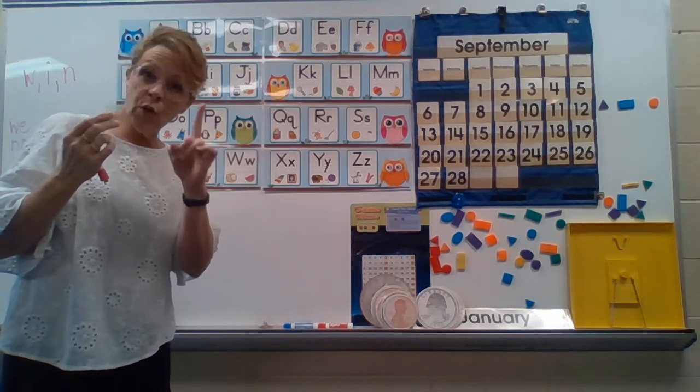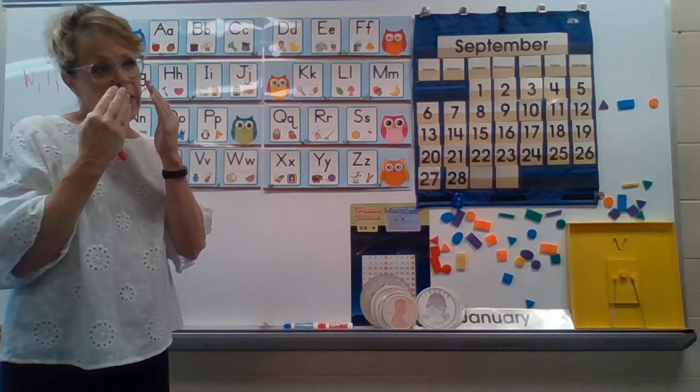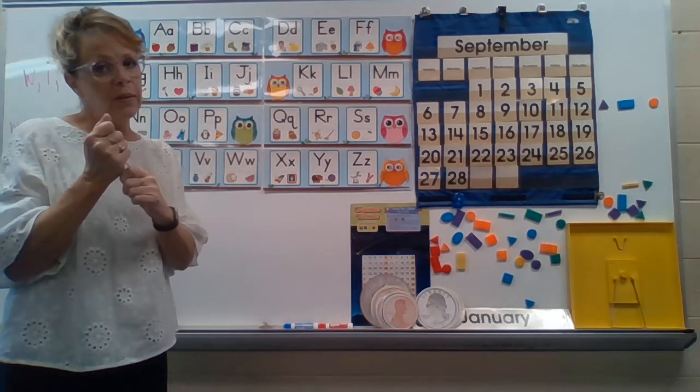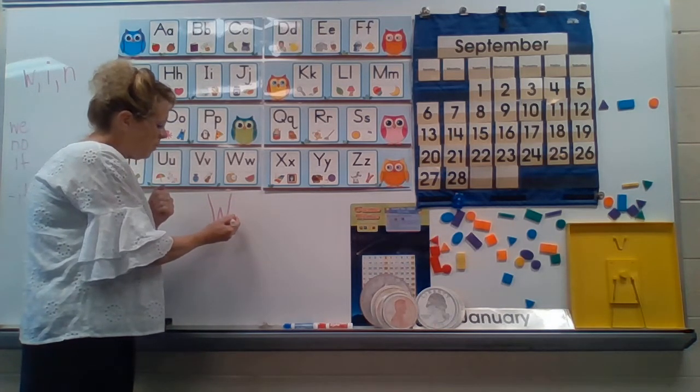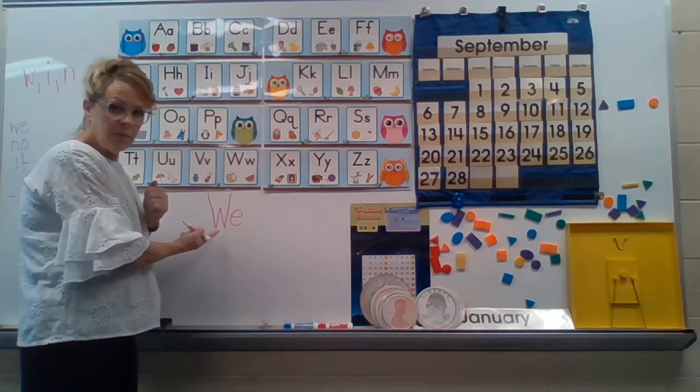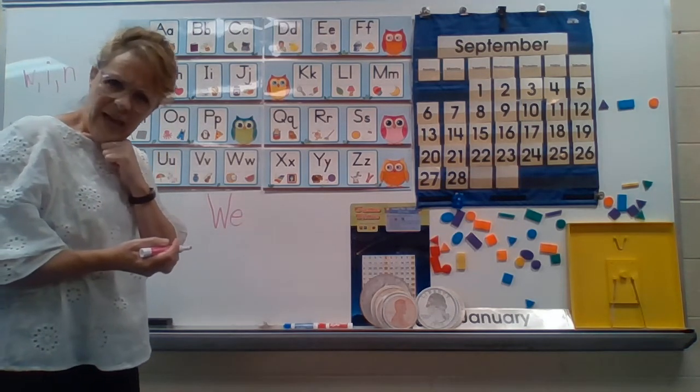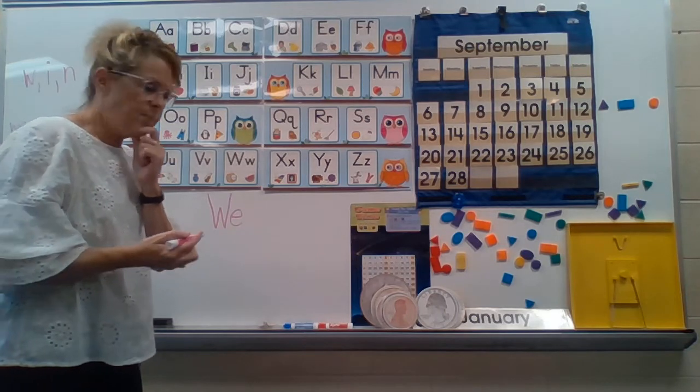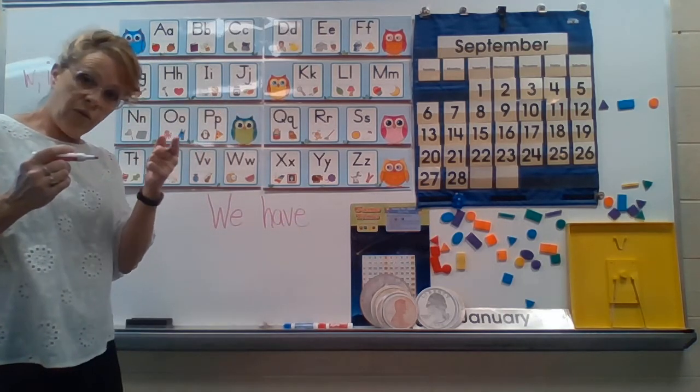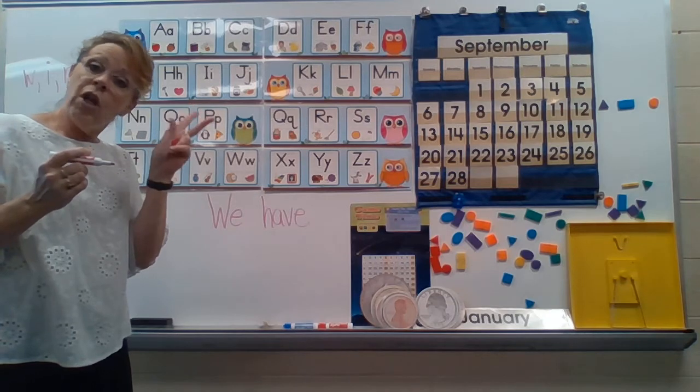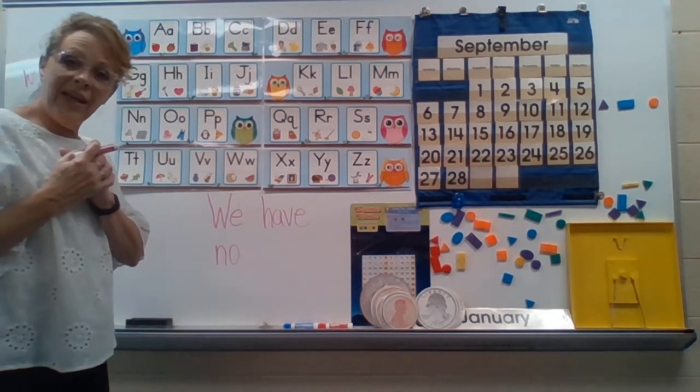When I write the first word in the sentence, what do I need to do with it? It's important. It tells people that's where we're starting our thoughts. So what do we do? We use a capital letter. So I'm going to use a capital W. We. And the next word was we have. What do you think have starts with? H. Now I'm going to use another sight word. We have no. N and O.